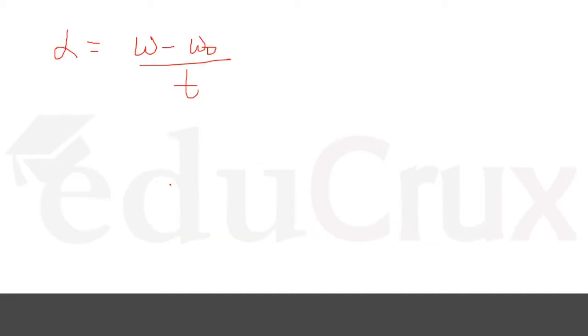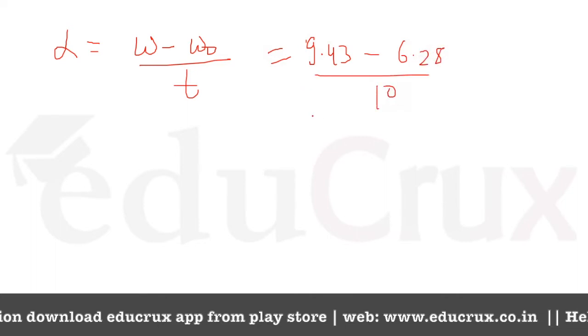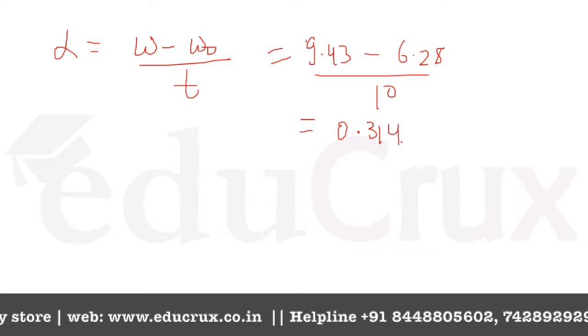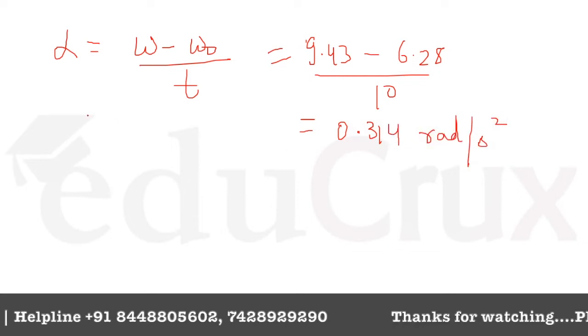So alpha angular acceleration will be 9.43 minus 6.28 divided by 10. And when we will solve this, this will come out as 0.314 radians per second squared. So this is our angular acceleration.